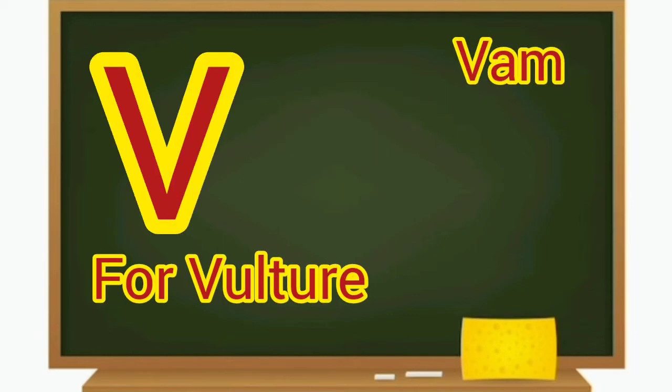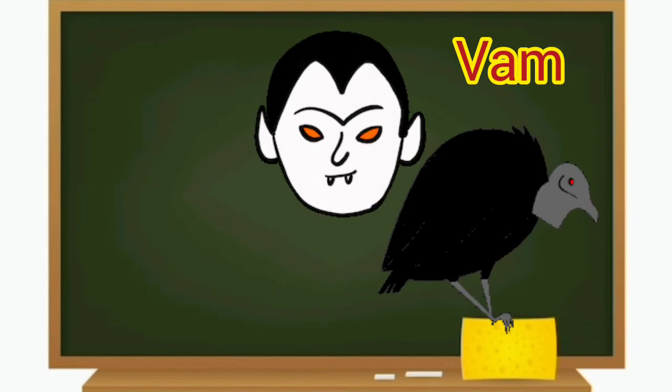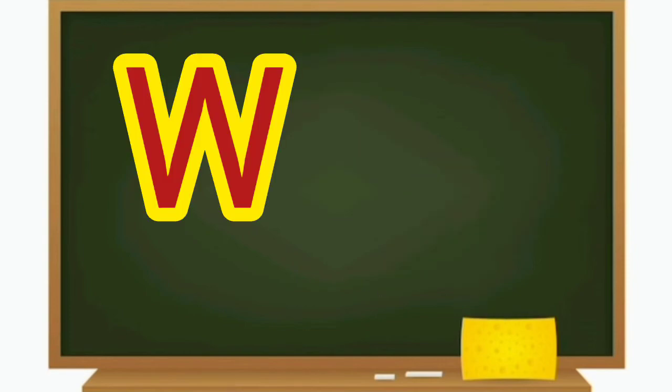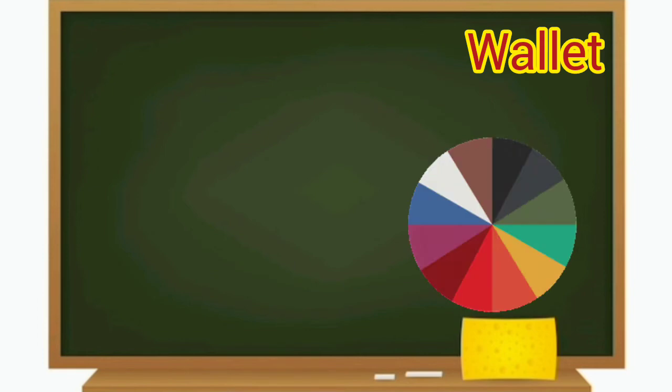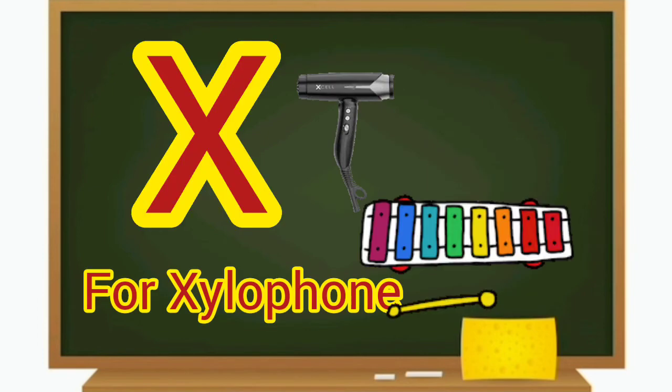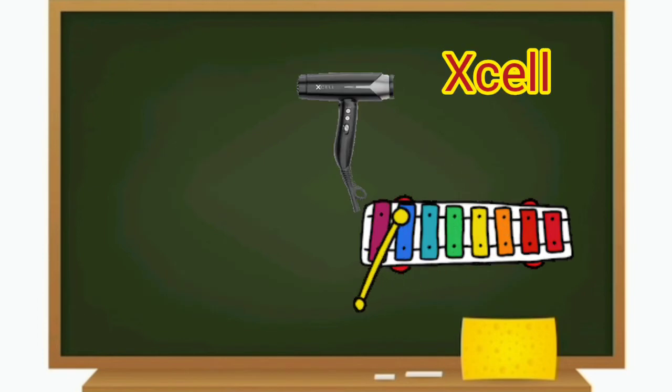V for vulture, V for band, W for weave, W for violet, X for example, X for axle.